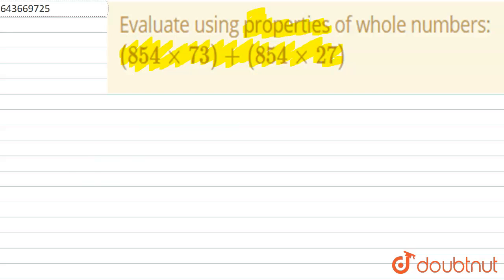So we have to use property and find the answer. We have 854 into 73 plus bracket of 854 into 27.